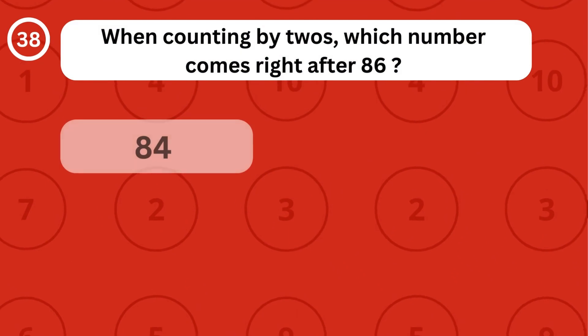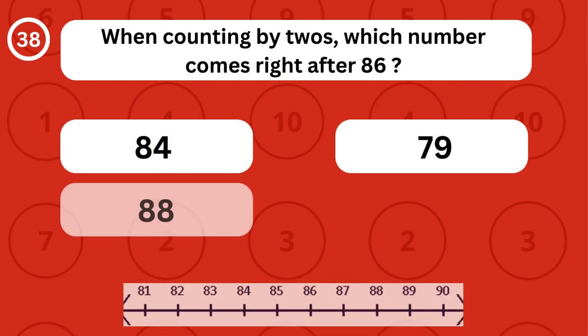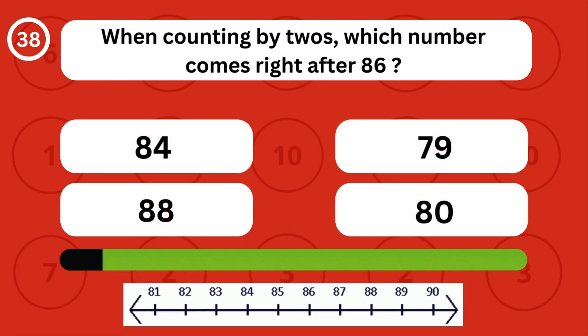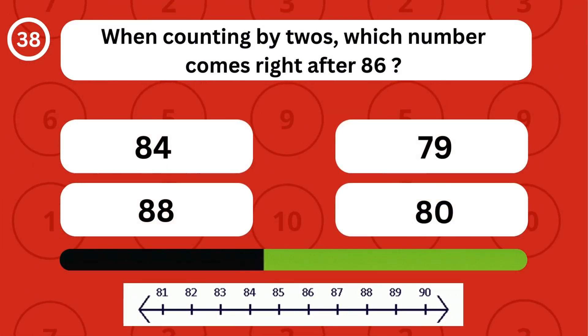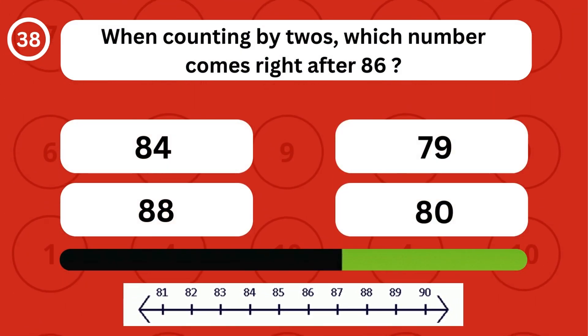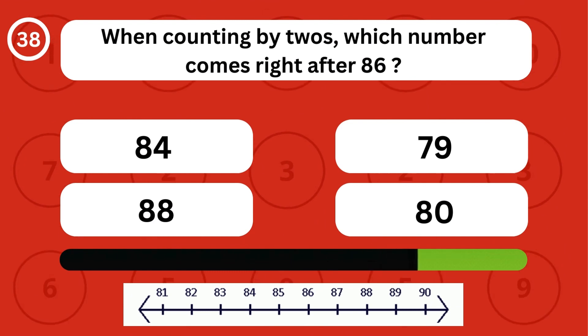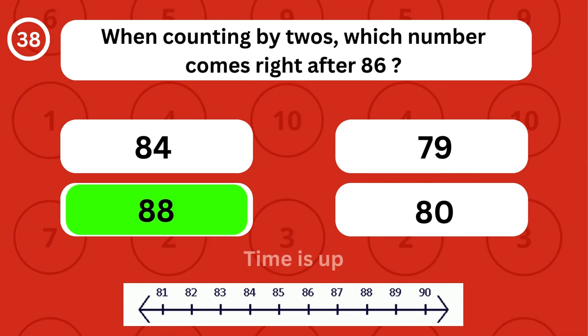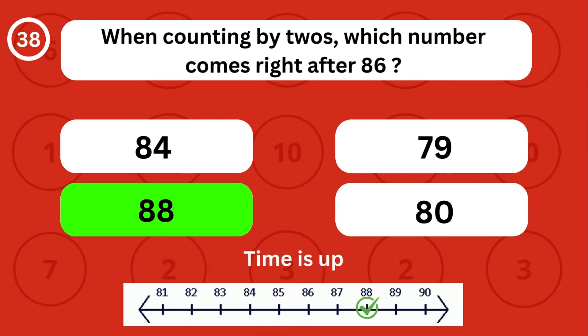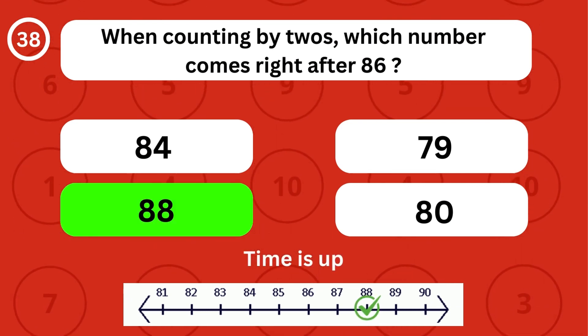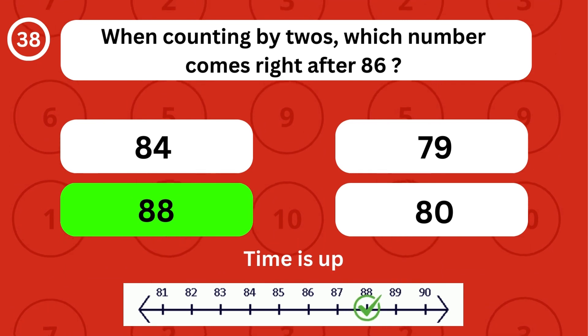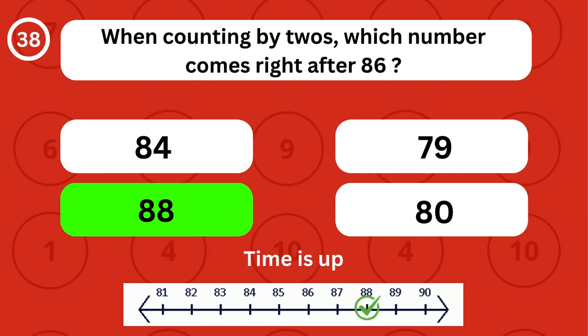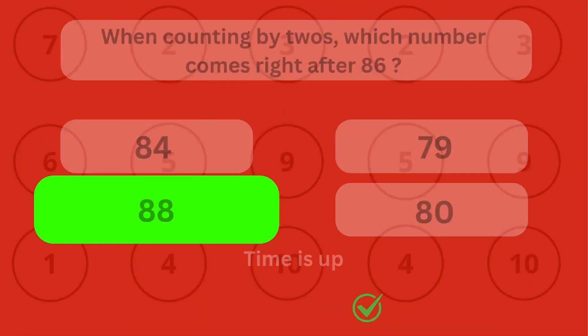When counting by twos, which number comes right after 86? When counting by twos, the number 88 comes right after 86.